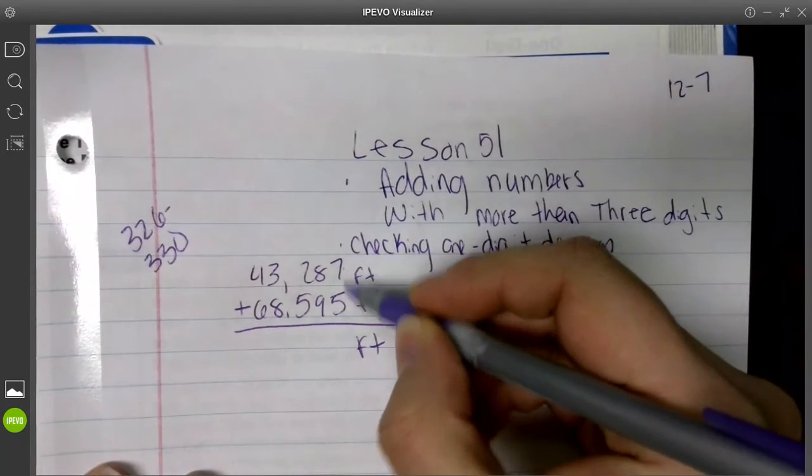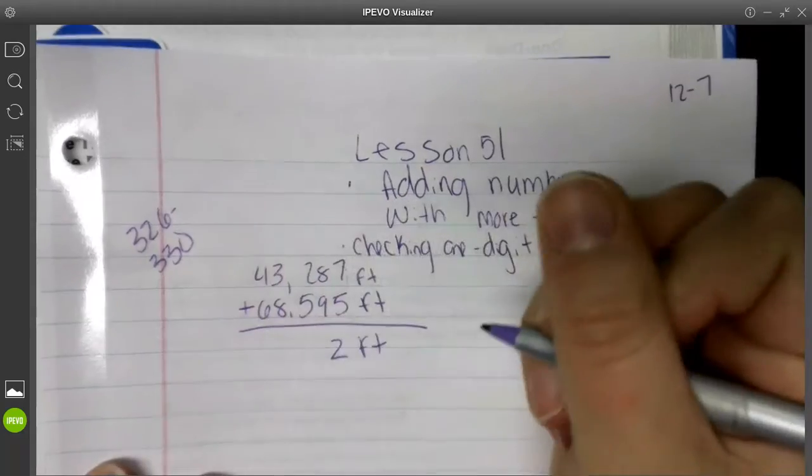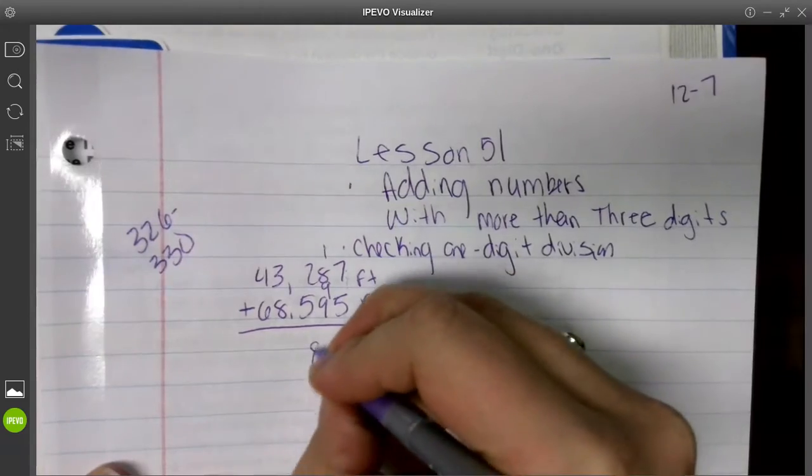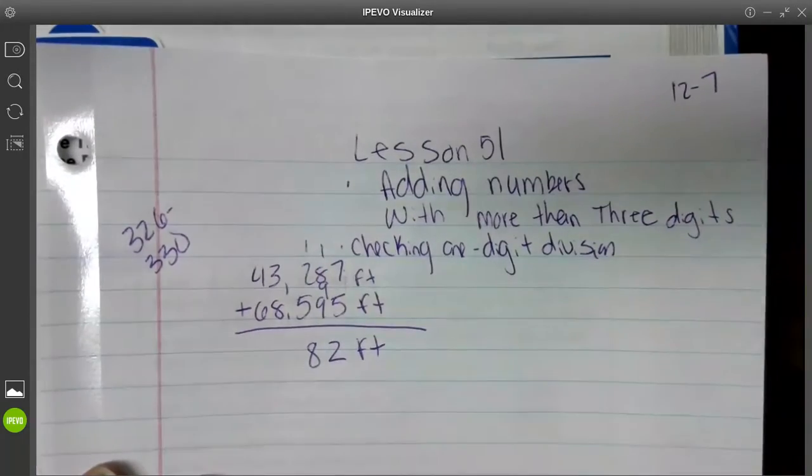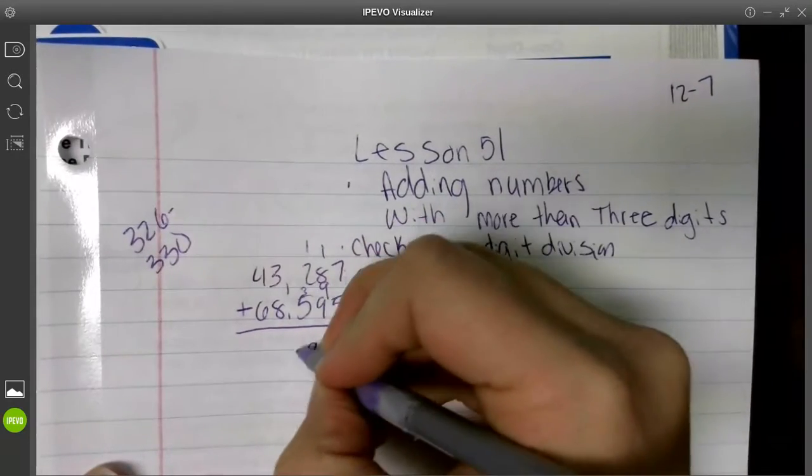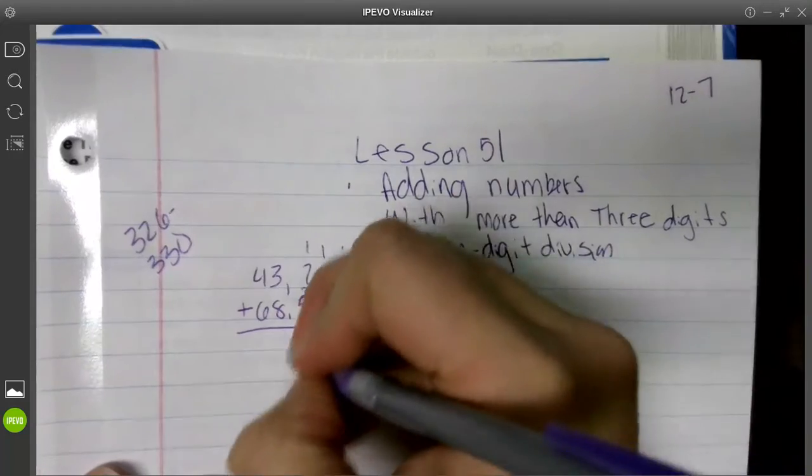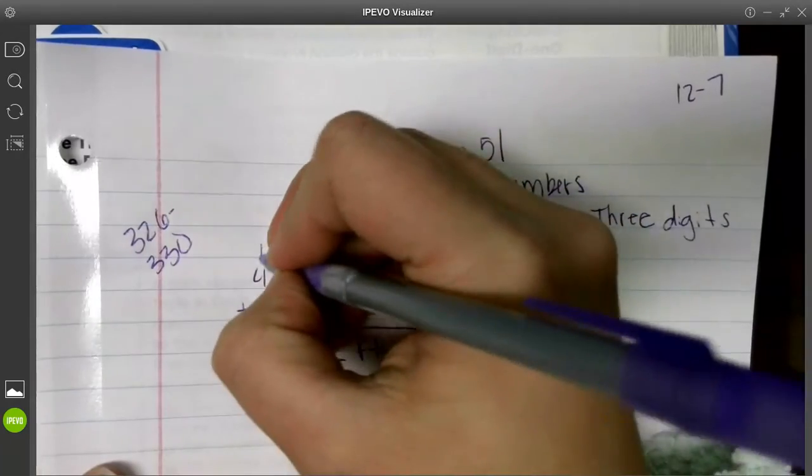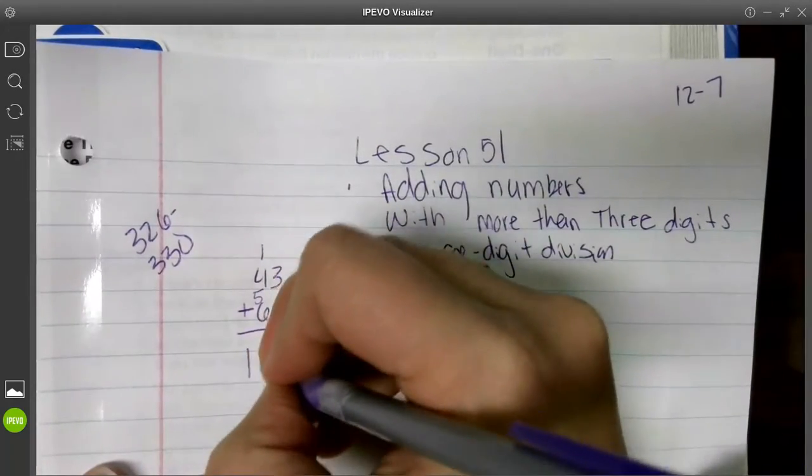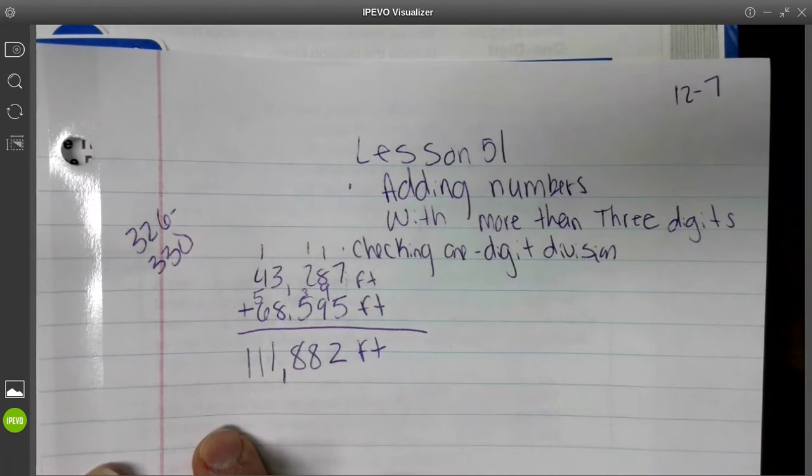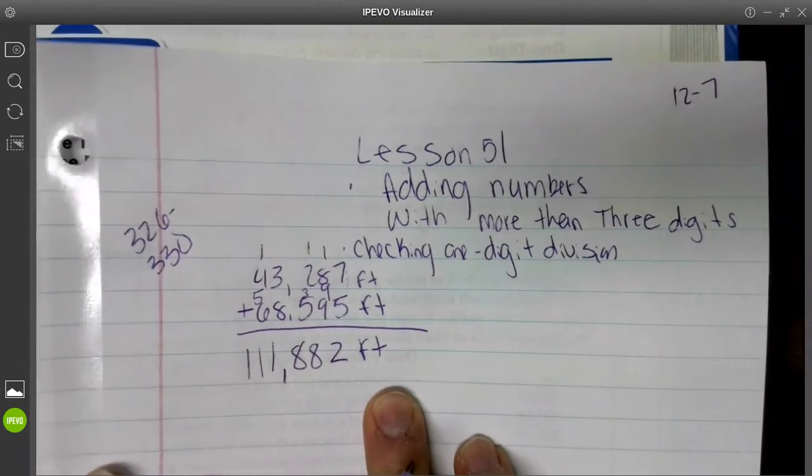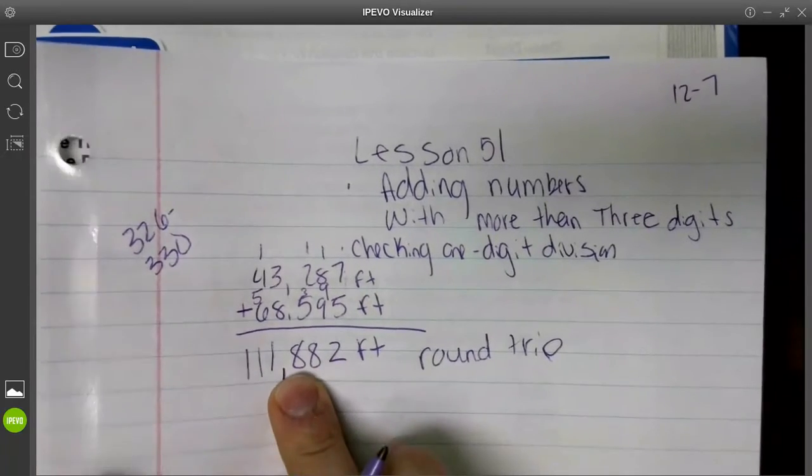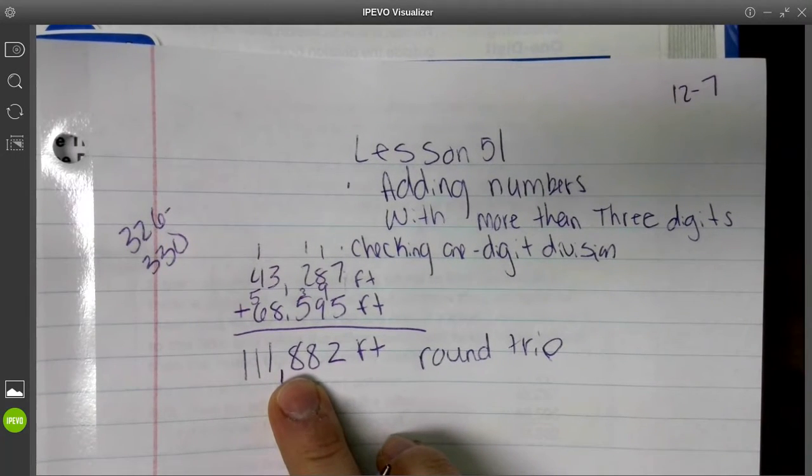Okay, so we're just going to add these numbers. Some of you might be like, how will we know how to do this? This should be a review of it. If you don't, that is where I'm here to teach you. We start in our ones column: seven plus five is 12. We write our two down and carry our one. One plus eight is nine. Nine plus nine is going to give us 18. We write the eight and carry our one. One plus two is three. Three plus five is eight, and this time we don't have to carry. We put our comma here. Now we have three plus eight is eleven, and we carry our one. One plus four is five. Five plus six is eleven. So we have 111,882 feet. I'm going to add the words round trip, so his round trip was 111,882 feet.